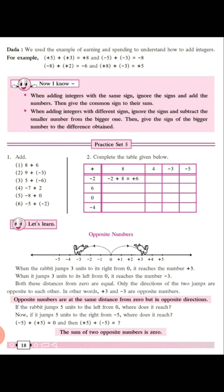Now, all the time we can't use a number line, so we are going to remember two simple rules for how to add integers. The most important thing while adding integers is to look out for their signs. Rule number 1 — pay attention carefully. Look at the example: plus 5 plus plus 3. 5 is positive and 3 is also positive, and in between them is an addition sign.